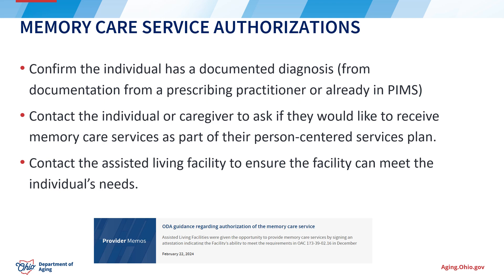Now let's talk about how the memory care service is authorized. As a case manager, you will want to confirm that the individual has a documented diagnosis of any form of dementia. This will be located in the medical information received from Medicaid from the PCP, or it will be on the assessment window in the medical information section under diagnoses in PIMS. You should then contact the individual and/or their caregiver to ask if they would like to receive memory care services as part of their person-centered service plan. Next, contact the assisted living facility to ensure it can meet the individual's needs. You may also want to work with your provider oversight team, as they can tell you where the service is being delivered in the setting.